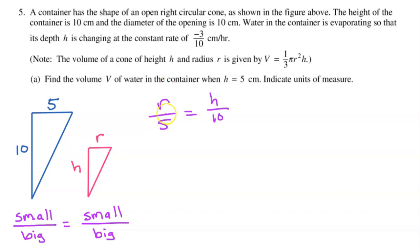So if I wanted to express R as a function of H, I could just multiply both sides by 5. So this would be R is equal to 5H over 10. In other words, the radius is one-half the height. This relationship will be very useful when it's time to find the volume at this particular water level.